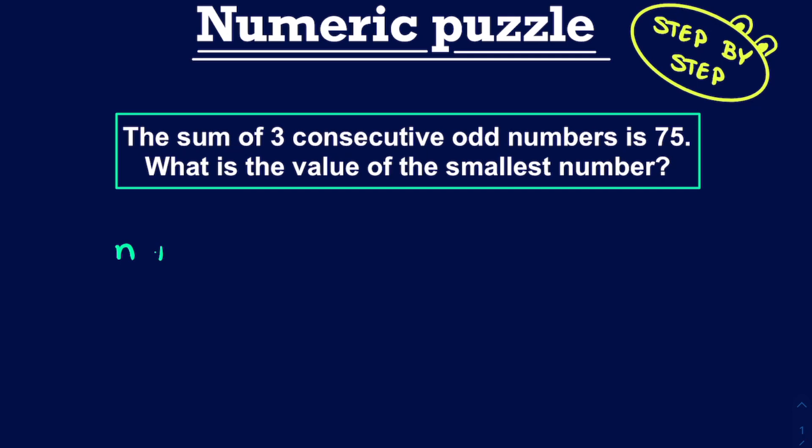Now we add to this the following odd number, which would be n plus 2. Now why n plus 2 and not n plus 1? Because if n is an odd number, then n plus 1 would be an even number. Therefore, the next number, or this consecutive odd number of n, is n plus 2. Of course,